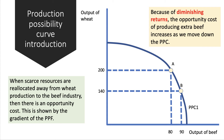Now, the curve is drawn as concave to the origin because of the assumption of the law of diminishing returns. That is, resources used in producing wheat are not necessarily as productive or as efficient, if you like, as producing beef. So therefore, the opportunity cost increases as we move down the production possibility curve.